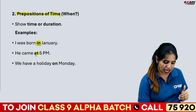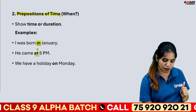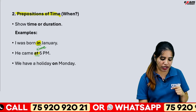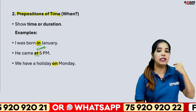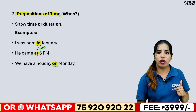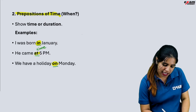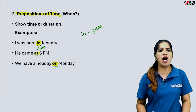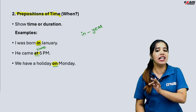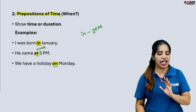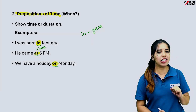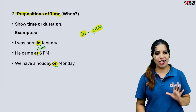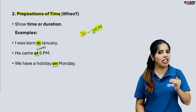If you want to use a specific time, it means a time-specific preposition. For example: 'We have class on Monday.' On Monday is a specific day. In January means a month. So prepositions of time include in, at, and on.